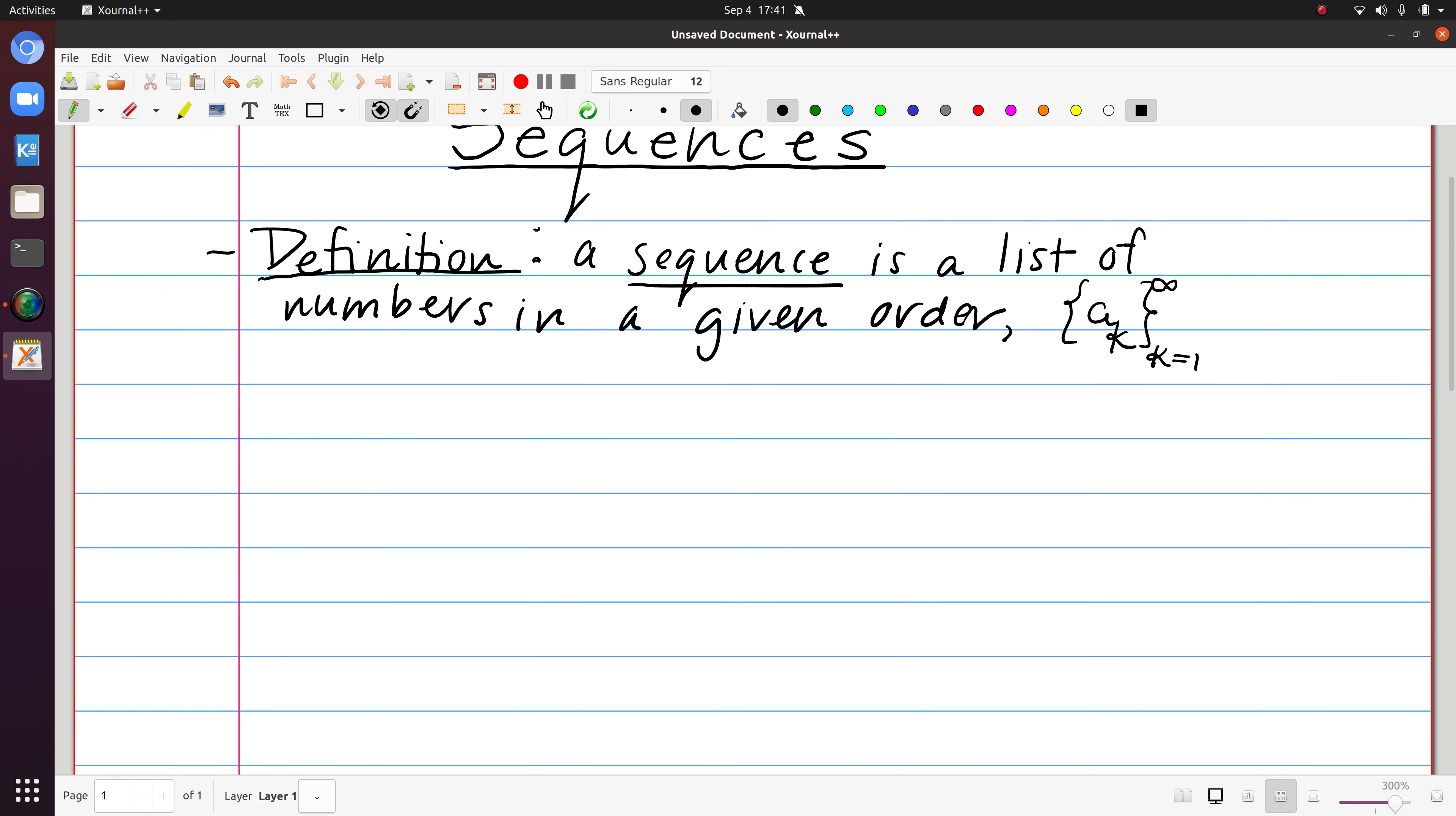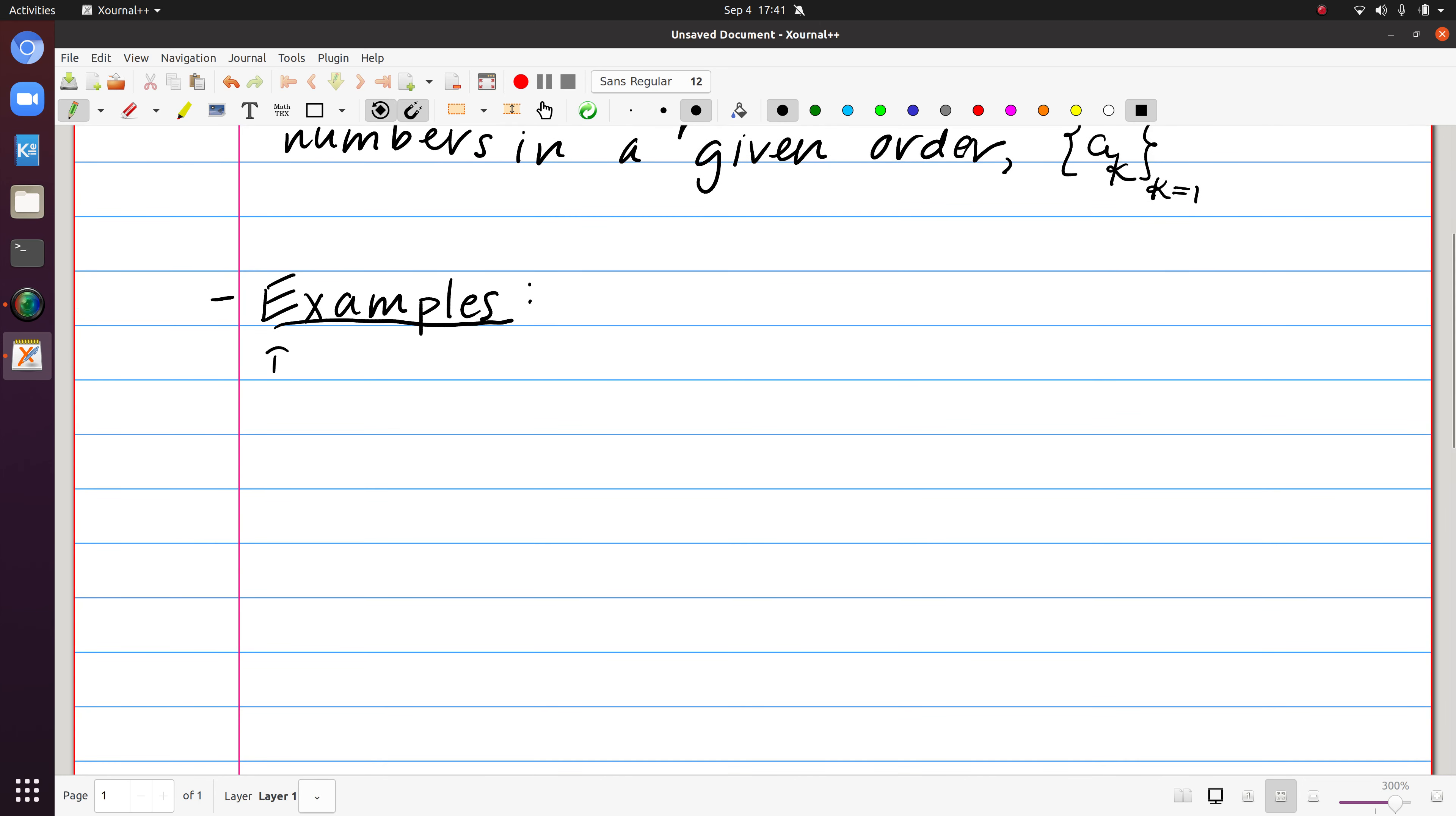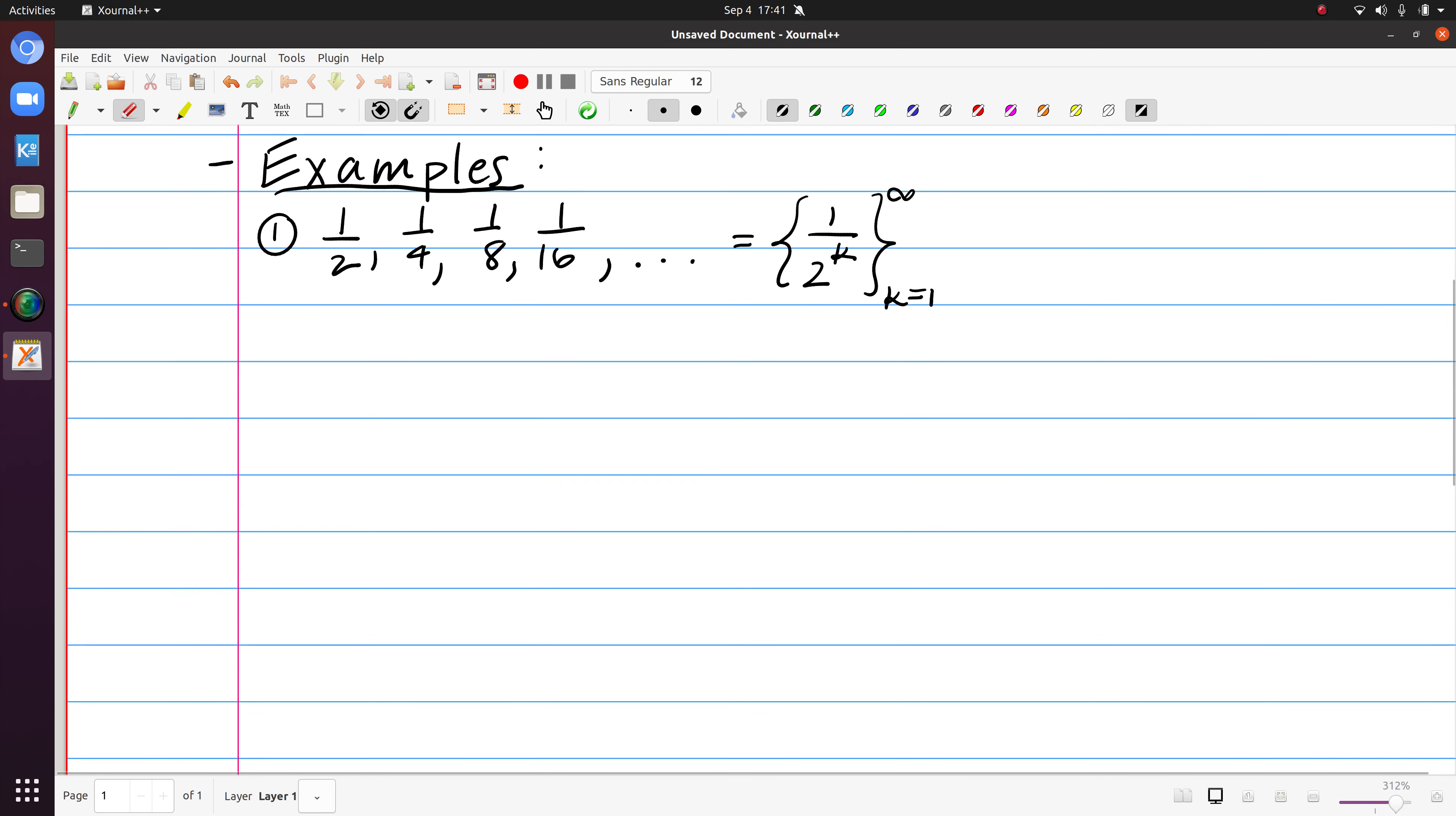To make sure this is clear, let's consider some examples of sequences. First of all, if I have the list one-half, one-fourth, one-eighth, one-sixteenth, and so on. If I were to write this in the a_k notation, I would first want to identify the general term, and so the pattern here seems to be that I have 1 over 2 to the k, and that will hold if k starts at the value 1, and because we're indicating that this list continues, I have infinitely many terms in the sequence. And again, we're going to be focusing on sequences with infinitely many terms.